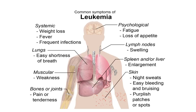Systemic symptoms of leukemia include weight loss, fever, and frequent infections related to immunosuppression. In the lungs, patients may experience shortness of breath, especially with activity. Muscular weakness and pain and tenderness in the bones and joints may also be present.